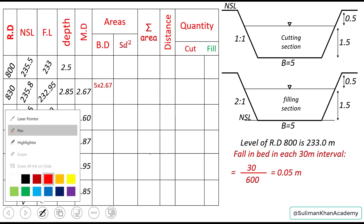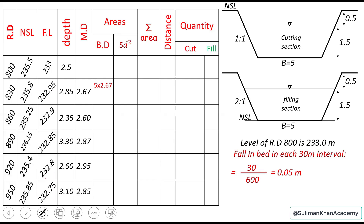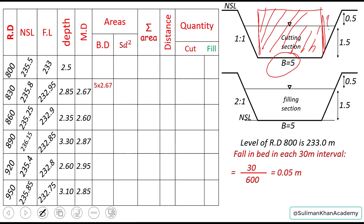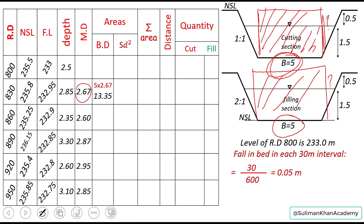The central area is a rectangle: b times d. Here b is the bed width, which is 5 meters, and d is the mean depth. So 5 times 2.67 gives 13.35. Then 5 times 2.6 gives 13, and 5 times 2.87 gives 14.35, and so on for each interval.